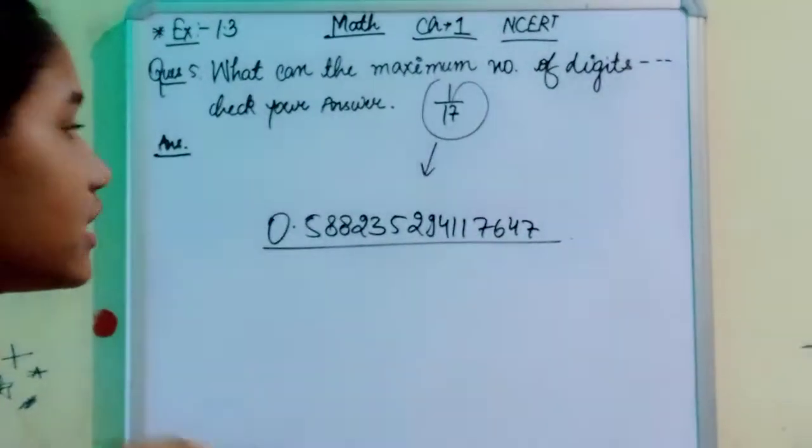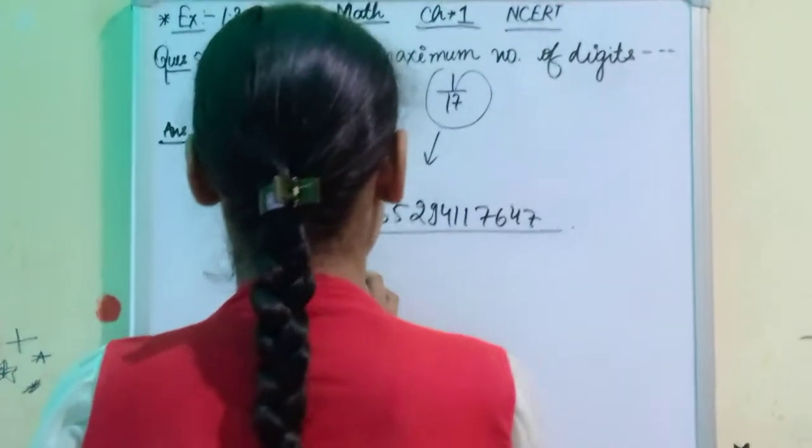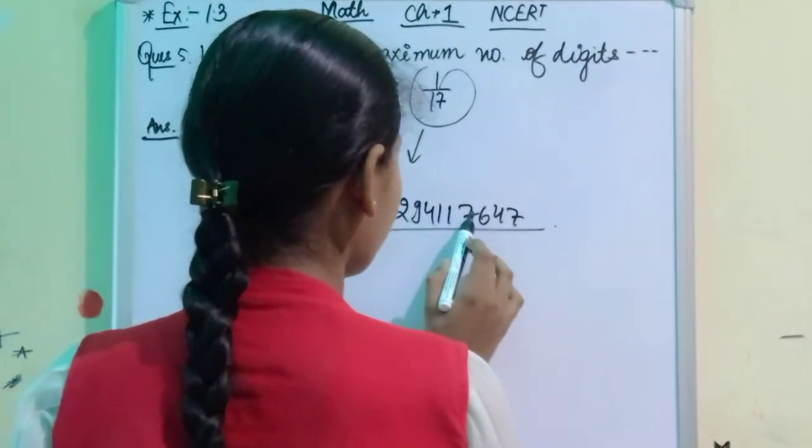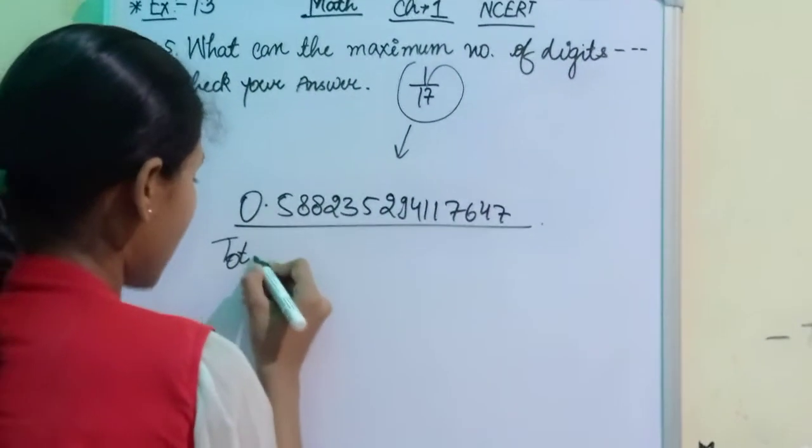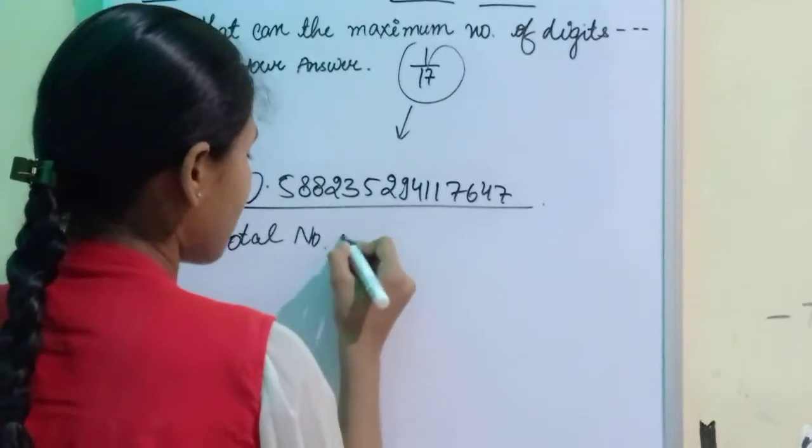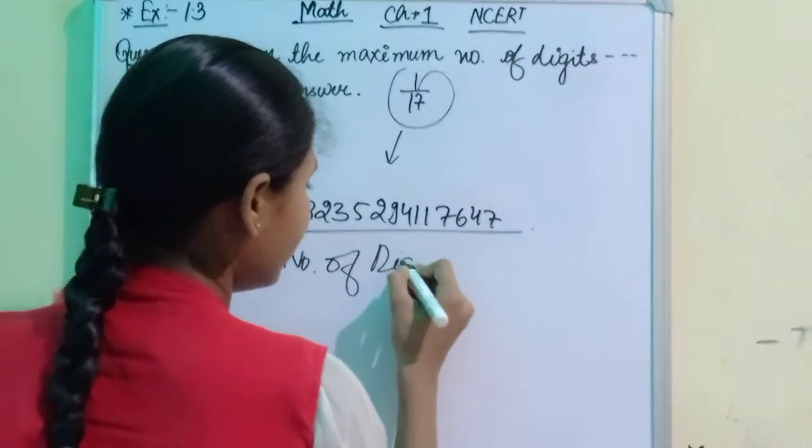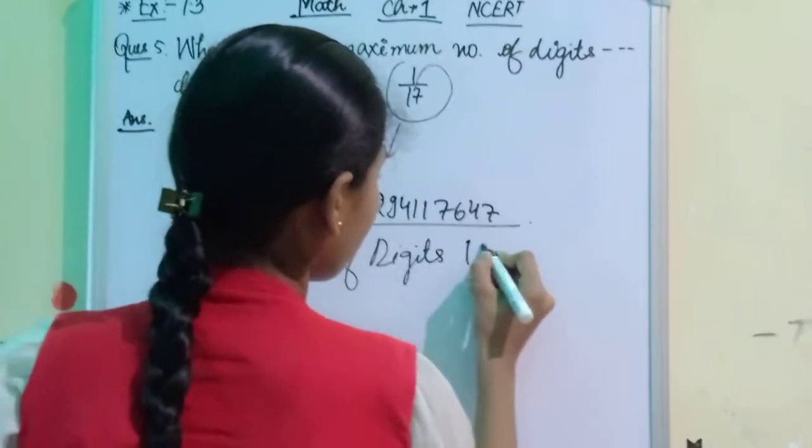So if we count the digits, let me count again: 1, 2, 3, 4, 5, 6, 7, 8, 9, 10, 11, 12, 13, 14, 15. So the total number of digits are 15.